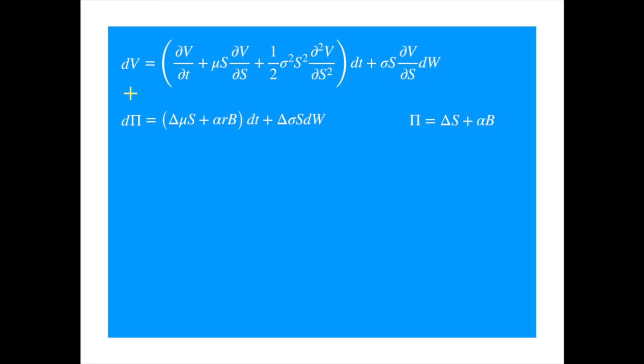And our aim is to choose delta, so that the coefficient of the stochastic term becomes zero. Isolating sigma to the left-hand side, and cancelling the sigma S term, we find that the delta is equal to the derivative of the option price with respect to the stock price.